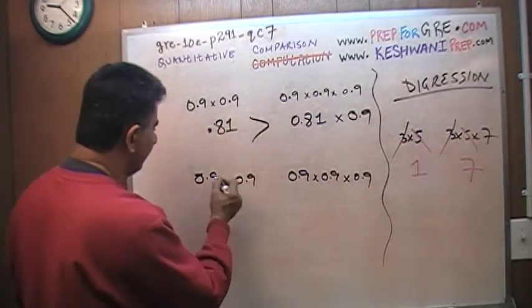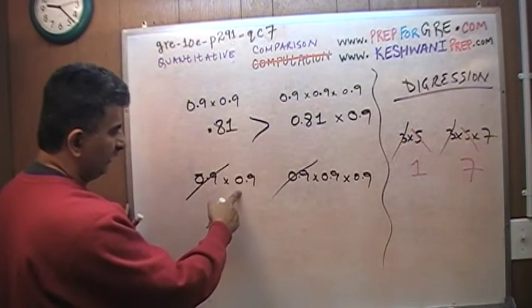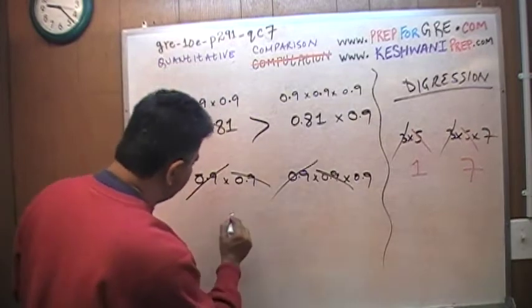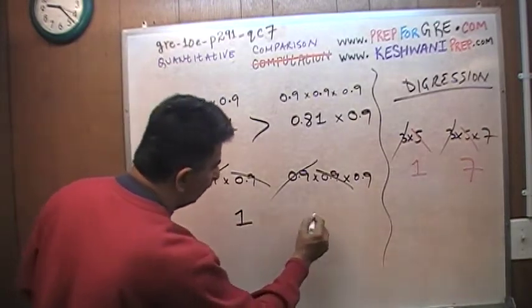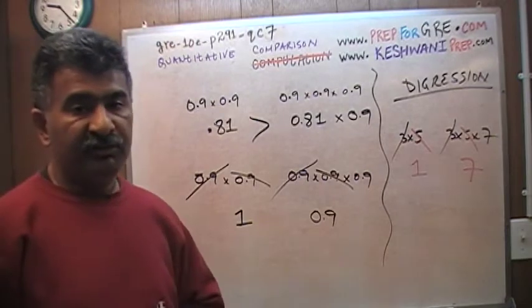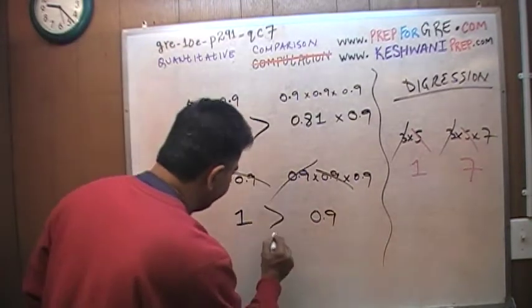So same thing I'm going to do here. Since 0.9 appears on both sides, if I were to divide both columns by 0.9, the 0.9 will drop out. Here's another 0.9 it appears here. I'm going to divide again one more time. So basically you're asking me to compare 1 versus 0.9. And you're asking me, are you smart enough to tell me which number is bigger, 1 or 0.9? Oh my god. That's all. The answer is A.